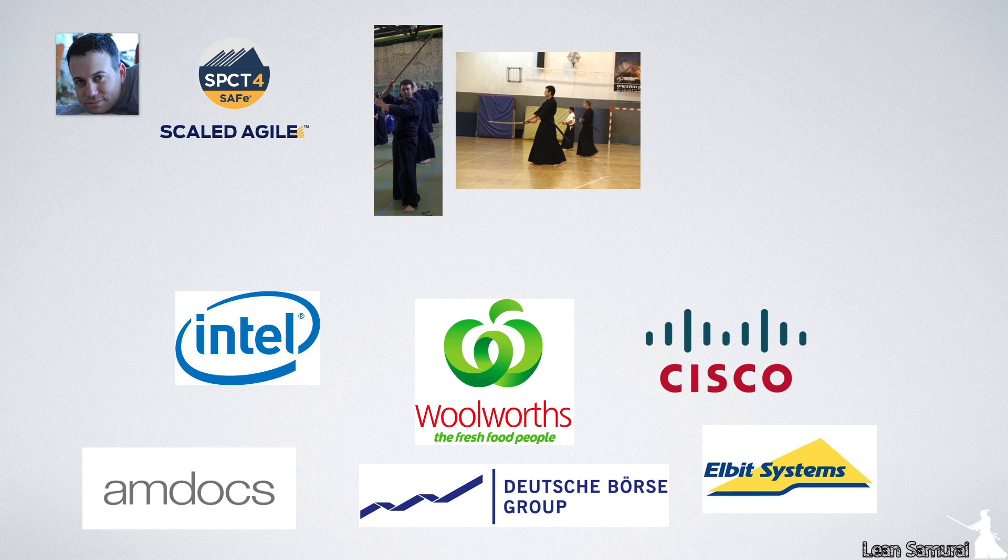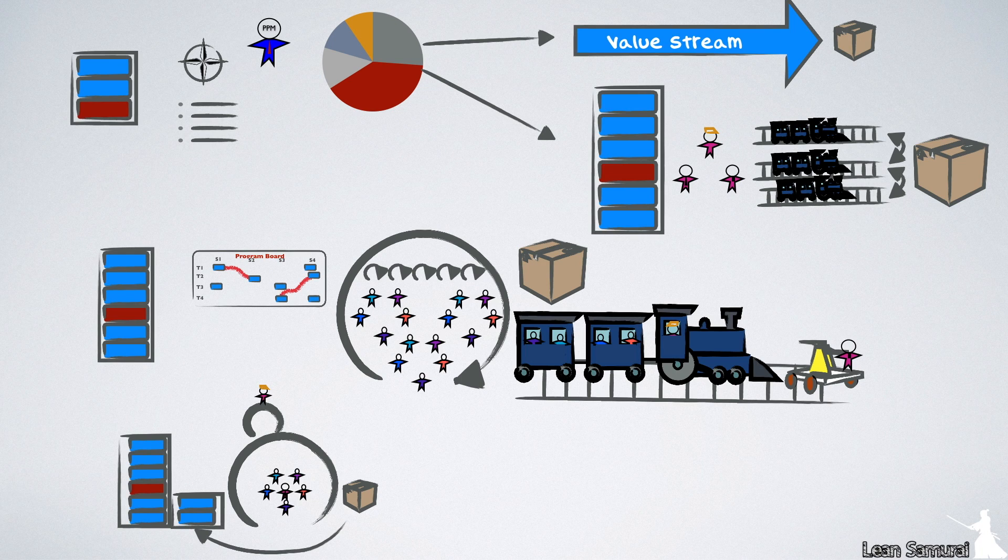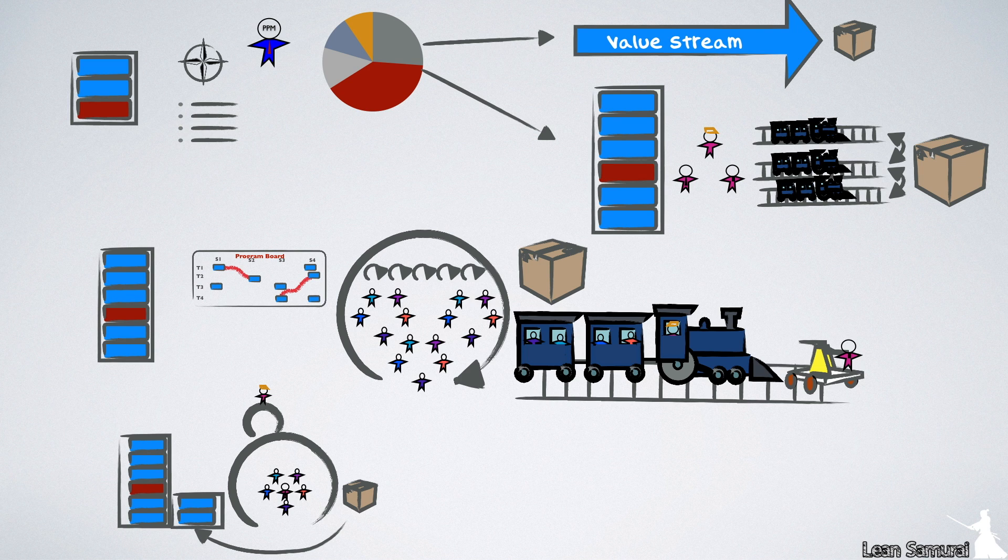In this video I will explain what SAFE is and how it works. SAFE is a framework meant to cover the entire organization. It operates on four levels: Portfolio, Value Stream, Program, and Team.